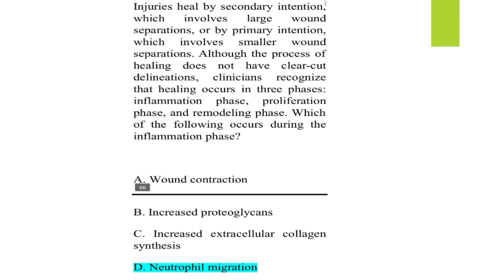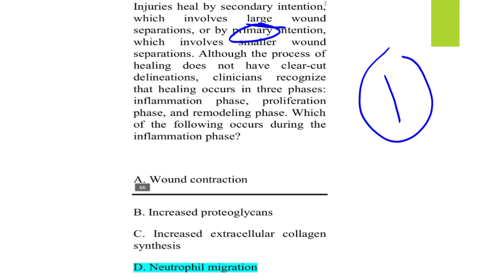The first MCQ is about injuries healed by secondary intention, which involves large wound separation, while primary intention involves smaller wound separation. Although the process of healing does not have clear-cut delineations, clinicians recognize that healing occurs in three phases.